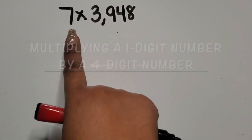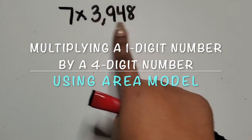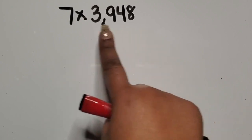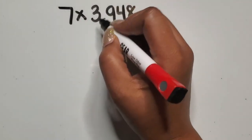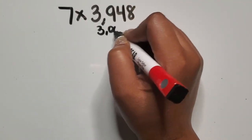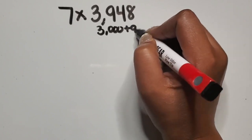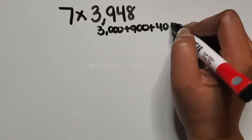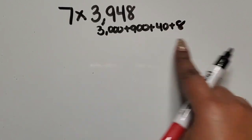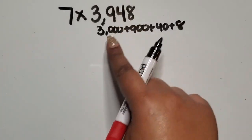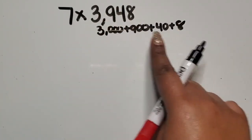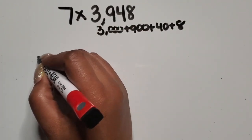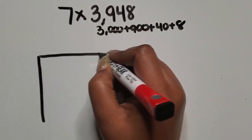We are going to multiply a one-digit number by a four-digit number. I want to break apart my four-digit number based on place value, so it's going to be three thousand plus nine hundred plus forty plus eight. That represents the value based on place value of this four-digit number.